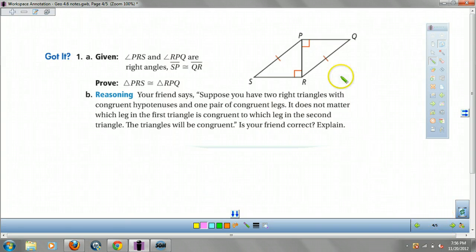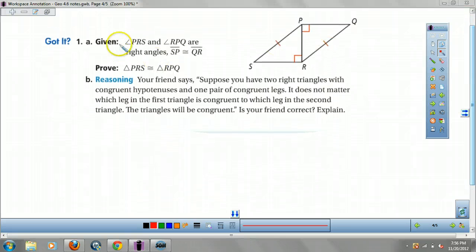Proof time. Suppose PRS and RPQ are right angles. And SP is congruent to QR. Prove this. So I'm going to open my statements. My reason.